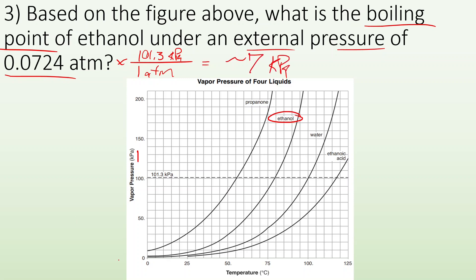So I find 7 on the chart, which is probably right about there, and see where that intersects with the ethanol line — right about there. Somewhere between 20 and 25 degrees. I might go with 20 degrees Celsius because it's kind of hard to tell on this chart where 7 is exactly. So if you put something in between 20 and 25 degrees, totally great.